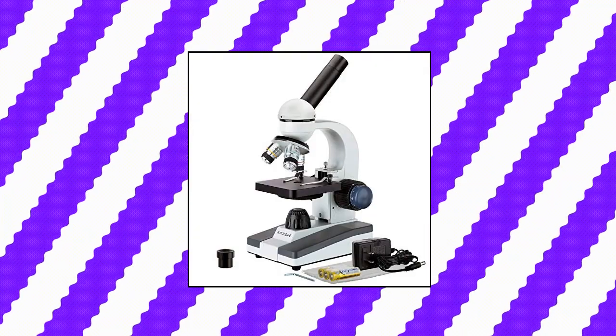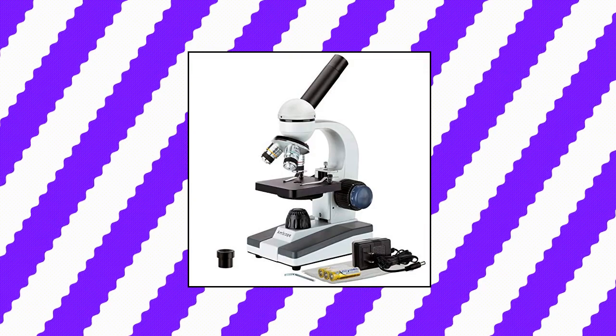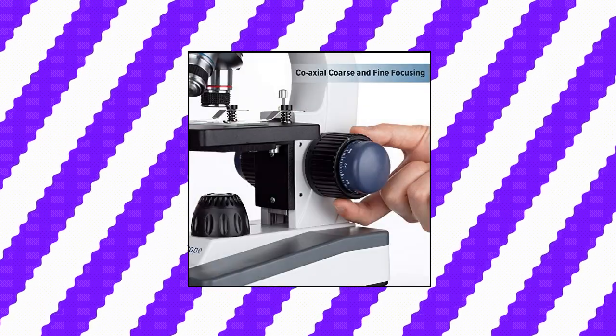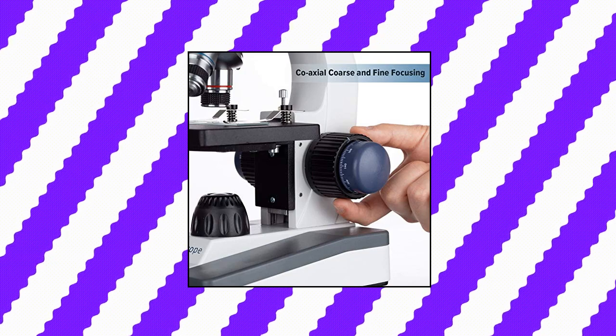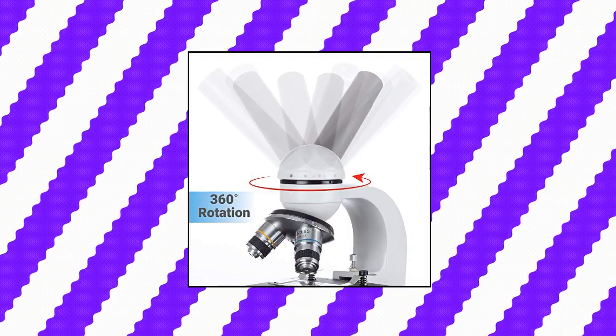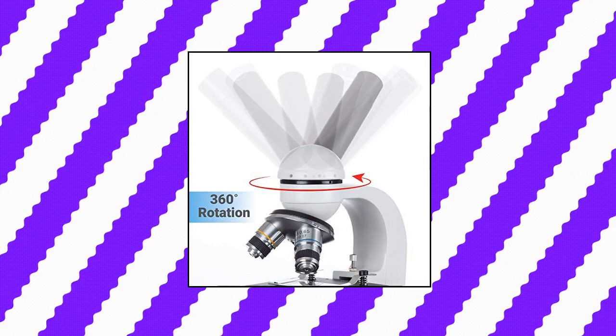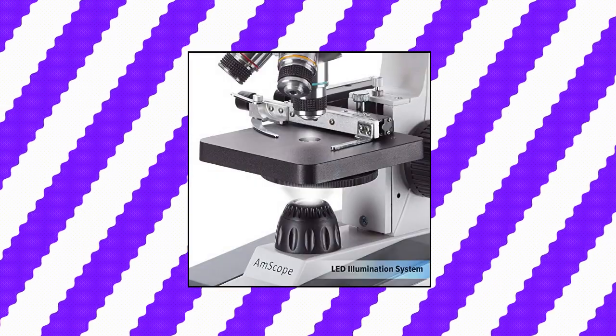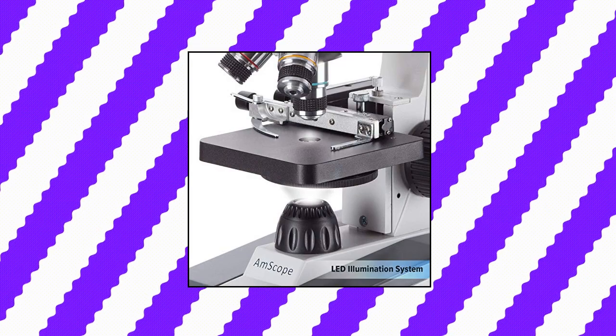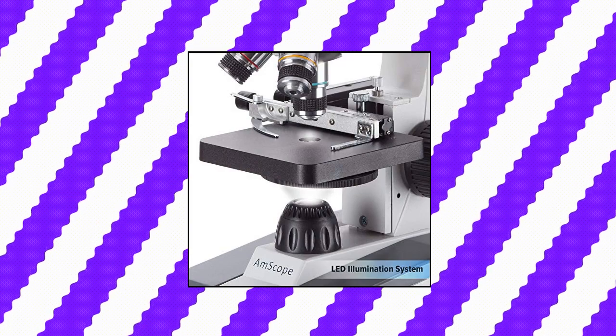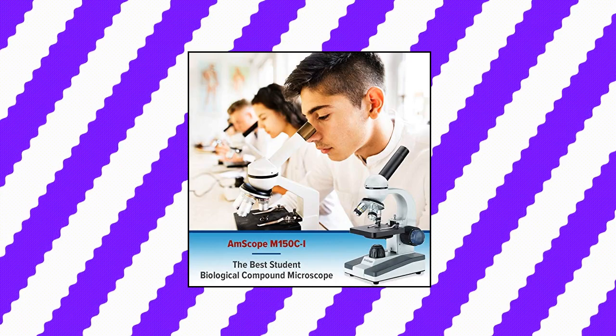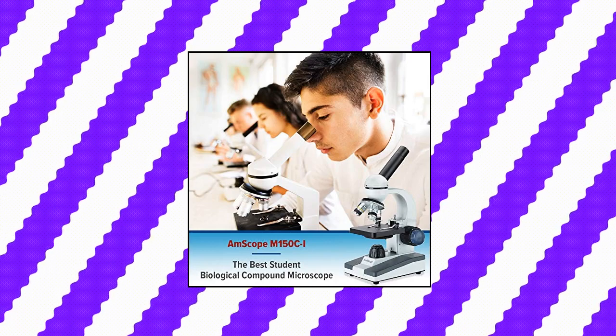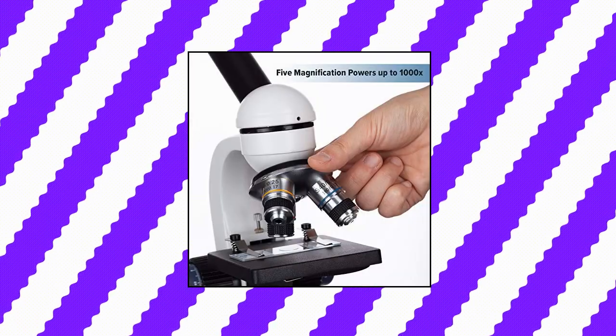M-Scope M150C 40x-1000x All-Metal Optical Glass Lenses Cordless LED Student Biological Compound Microscope. This is an ideal microscope for home school or for students in elementary to high school to learn sciences. 360-degree rotatable monocular head offers five magnification settings: 40x, 100x, 250x, 400x and 1000x. Wide-field all optical glass elements includes single-lens condenser with disc diaphragm, sturdy all-metal framework.